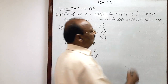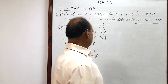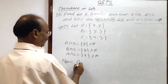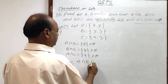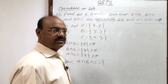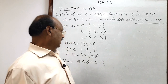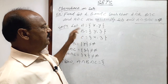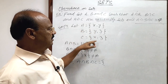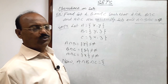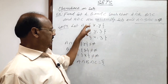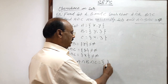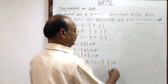Now we have to show that A∩B∩C is phi (the null set). A∩B∩C consists of elements common in all three sets A, B, and C. Looking at these sets, is there any element common to all three? No — there is no such element common in all three sets. So this set will be the empty set, denoted by phi.